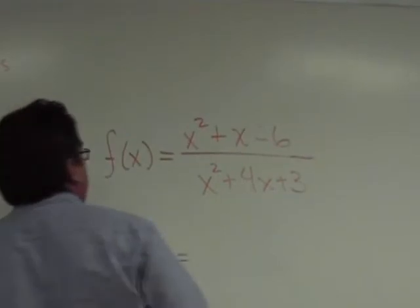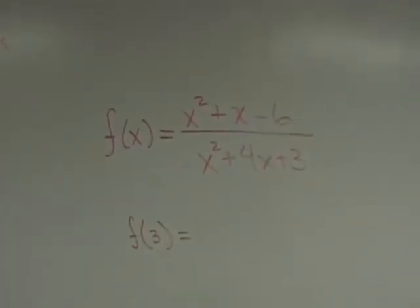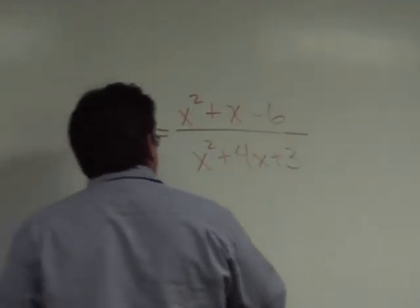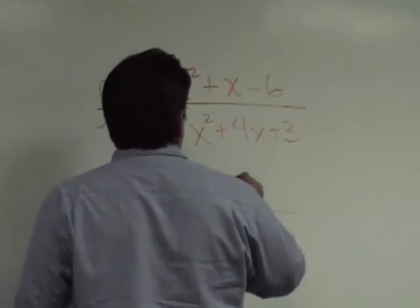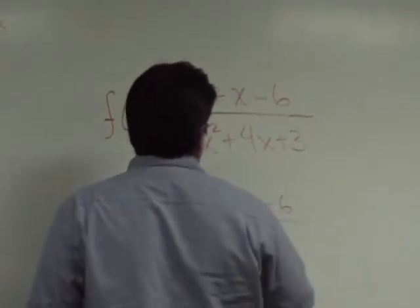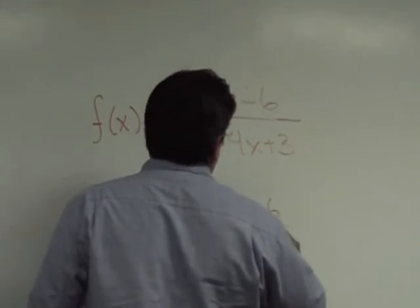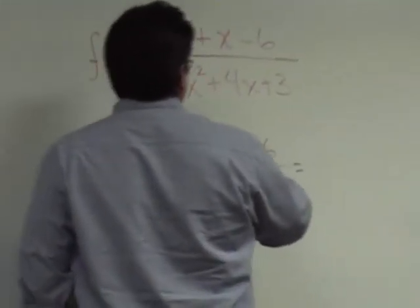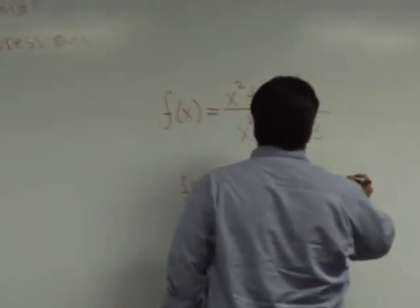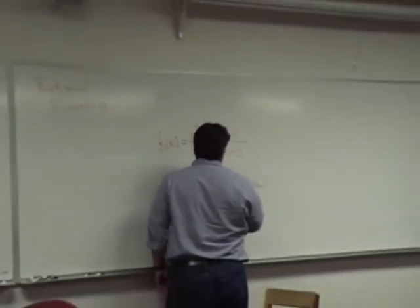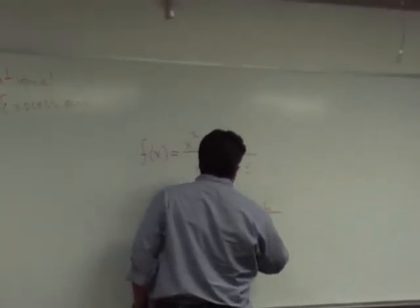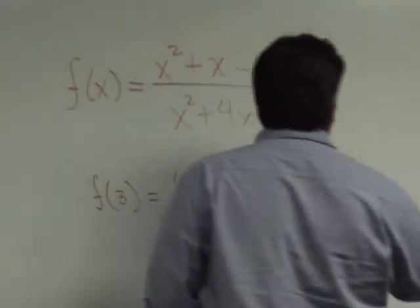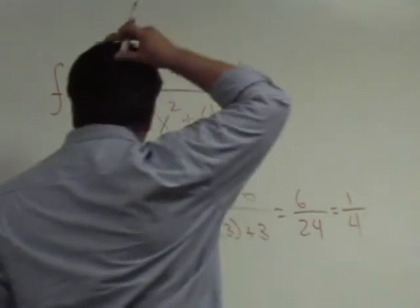How would you find f of 3? What do you do with this number right here? Correct, so the numerator becomes 3 squared plus 3 minus 6, over 3 squared plus 4 times 3 plus 3. And you get, you can do this with your calculator, 9 plus 3 minus 6, I get 6, over 9 plus 12 is 21 plus 3 is 24. And when you reduce that, it turns out to be 1 over 4.